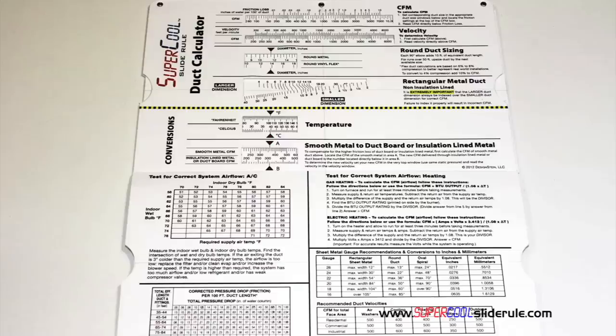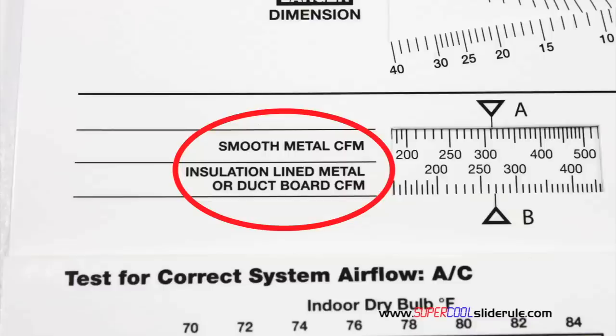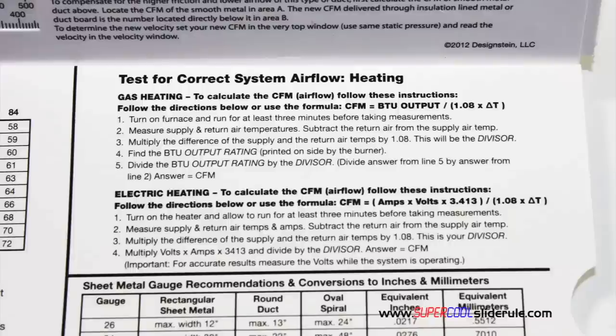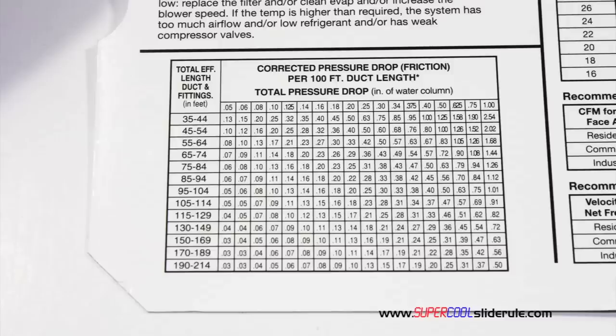Inside is packed with even more information. It performs sizing of both metal and flexible duct. It has the only direct reading conversion from smooth metal to insulation lined metal we've ever seen. The majority of technicians have never been taught that if the insulation is on the inside of the ductwork, you cannot size it with a regular duct calculator. It has step-by-step directions for determining airflow through a gas furnace, electric furnace, or an air conditioning unit. It has pressure drop multipliers for ductwork as well as recommended velocities.